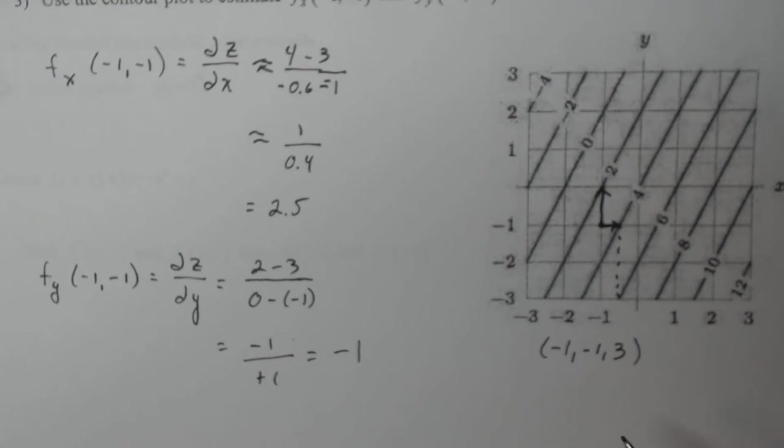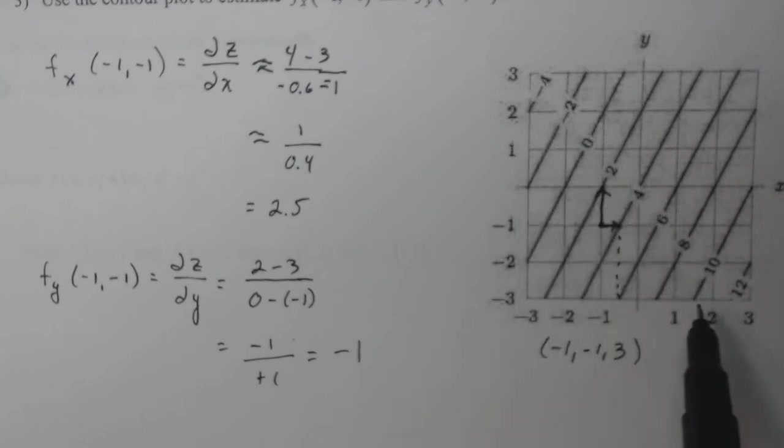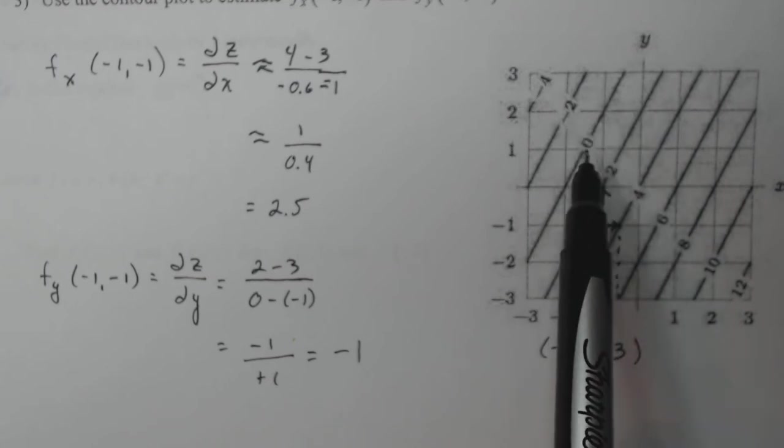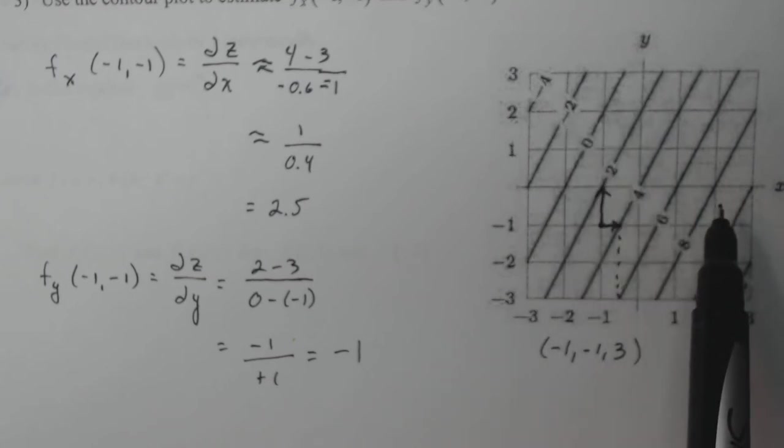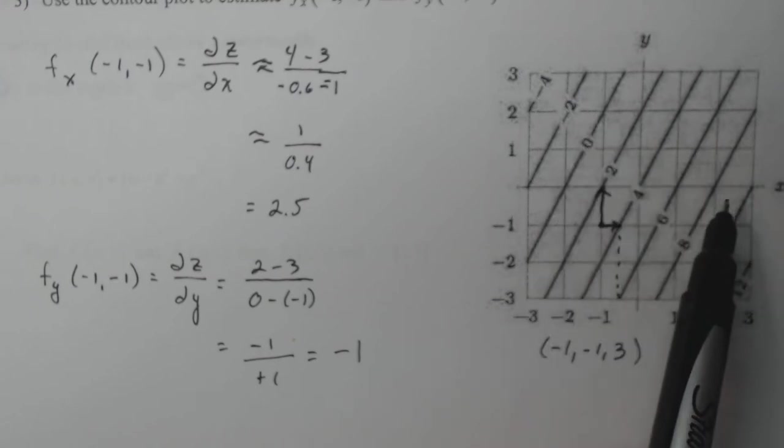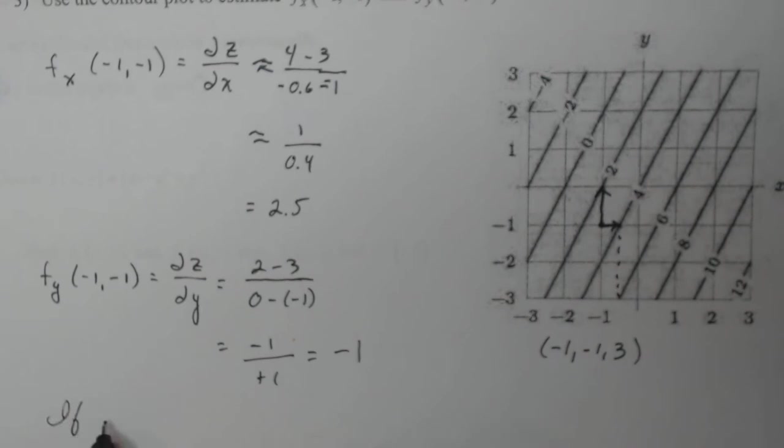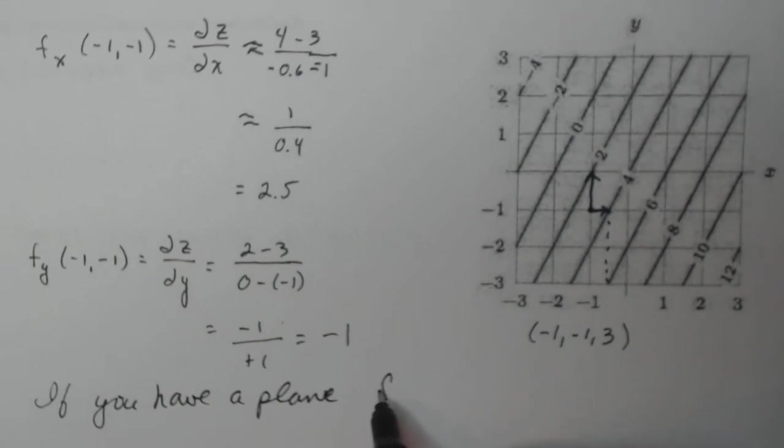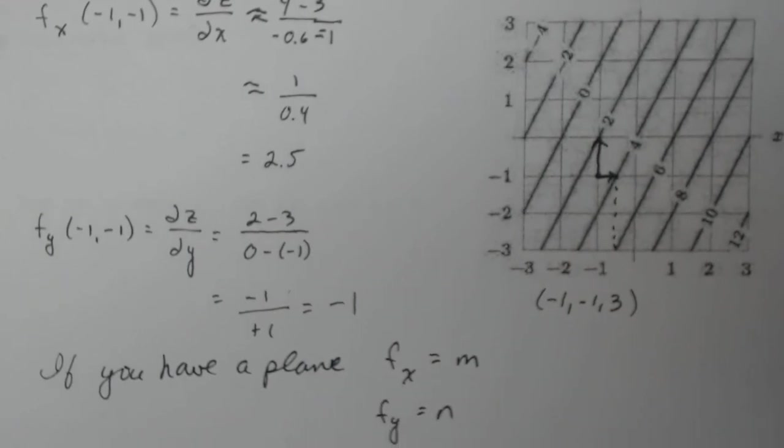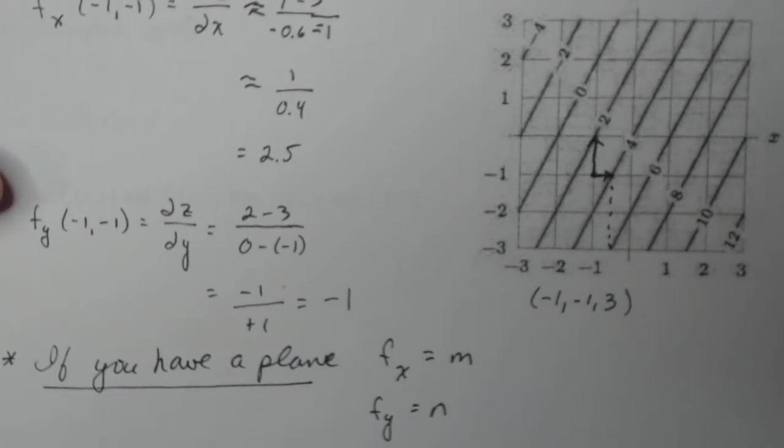Now, if you are awake listening to this, you'll notice that this probably is the equation of a plane. Because there are parallel lines, the z values are equal distance apart, and the lines are equal distance apart. Not only parallel, but equal distance. So this is a plane. If you know you have a plane, I'm going to tell you, if you have a plane, F sub X will always equal M and F sub Y will always equal N. That's only in the instance of a plane. So don't apply that everywhere.